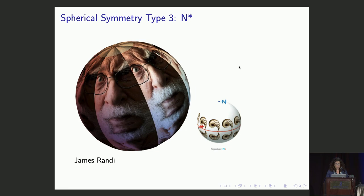If instead of rotational symmetry, we put a mirror line at the equator, we get N-star symmetry, shown by James Randi. Here N is about seven.